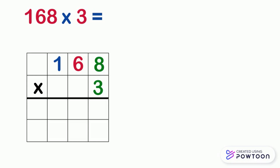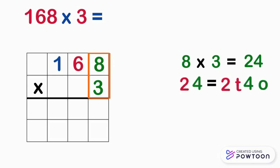We will start with the 1's place. 8 times 3 equals 24. The number 24 is made up of 2 tens and 4 ones. We will write 4 in the 1's place column in the answer box, and we will carry 2 to the top of the 10's place.